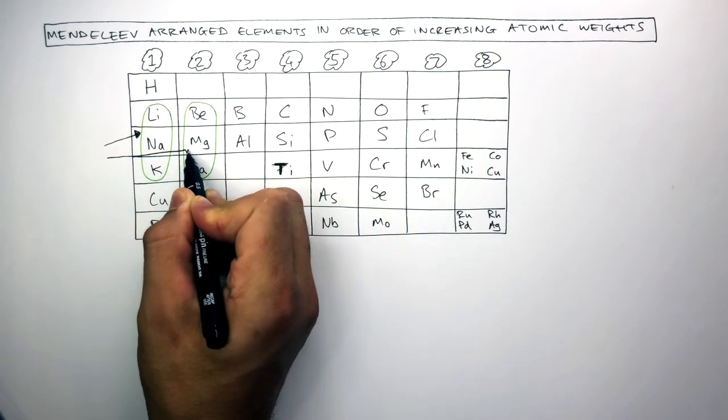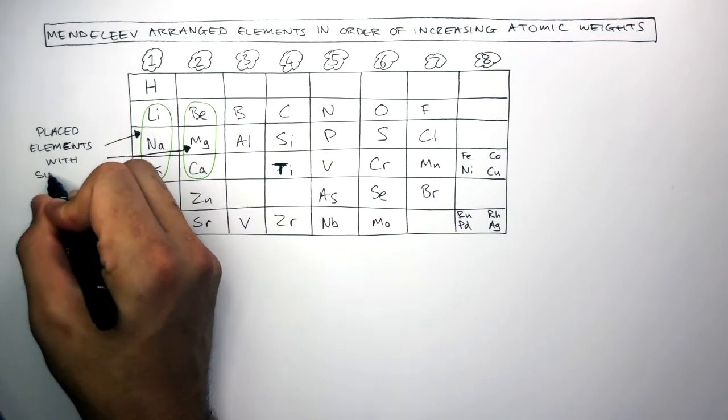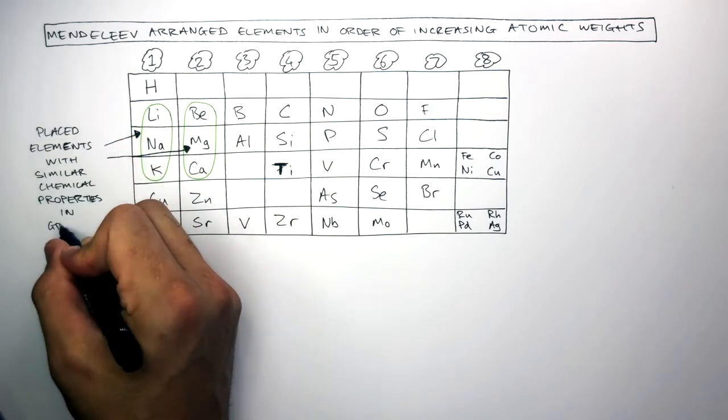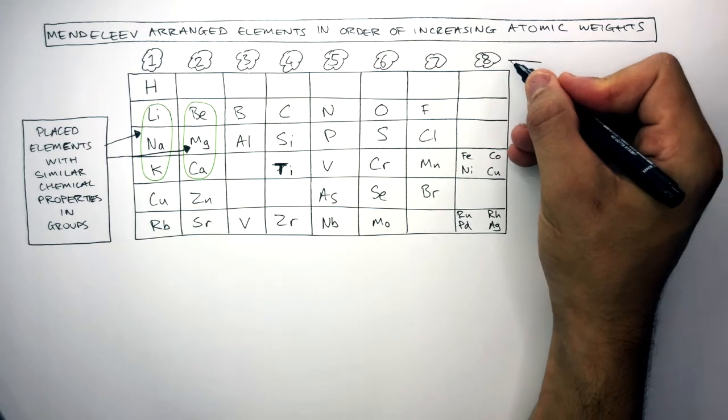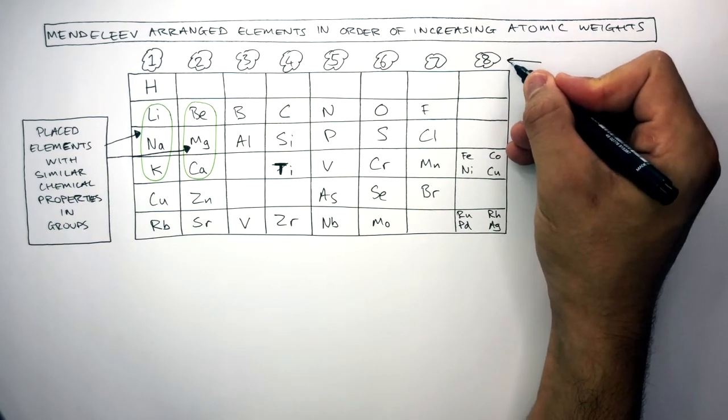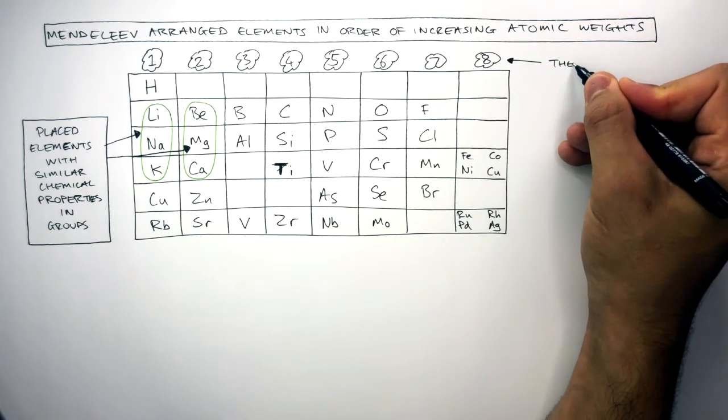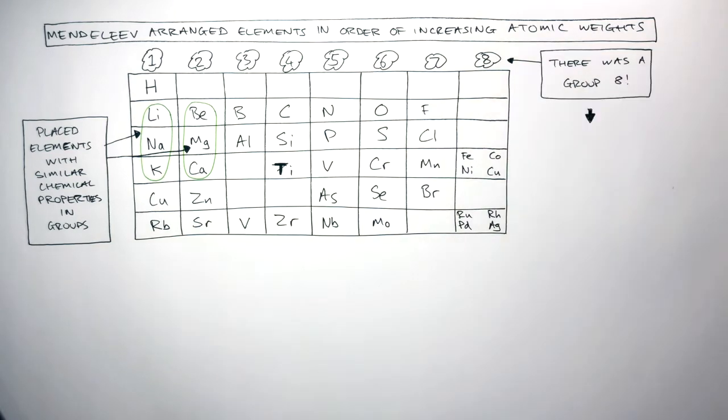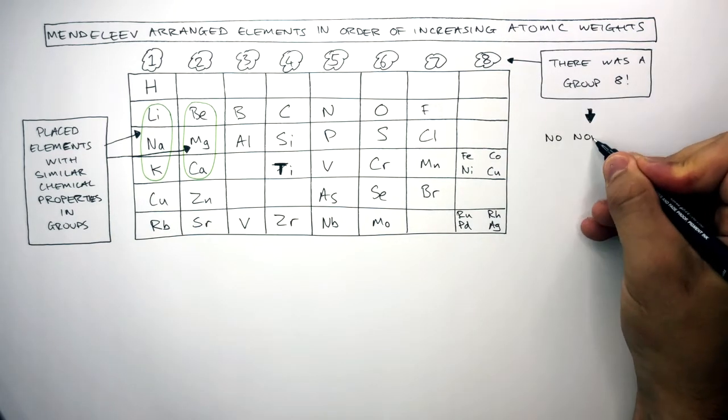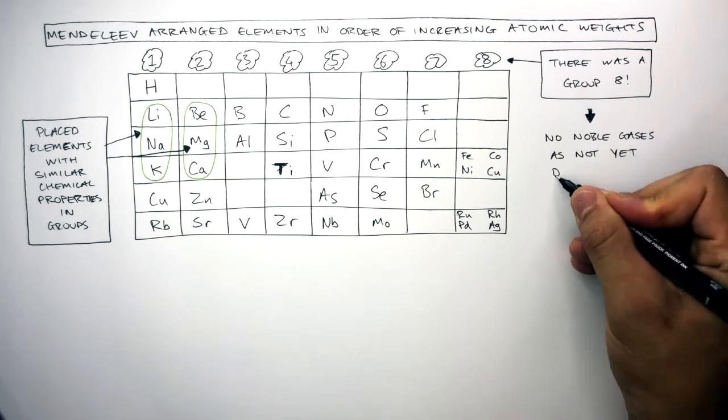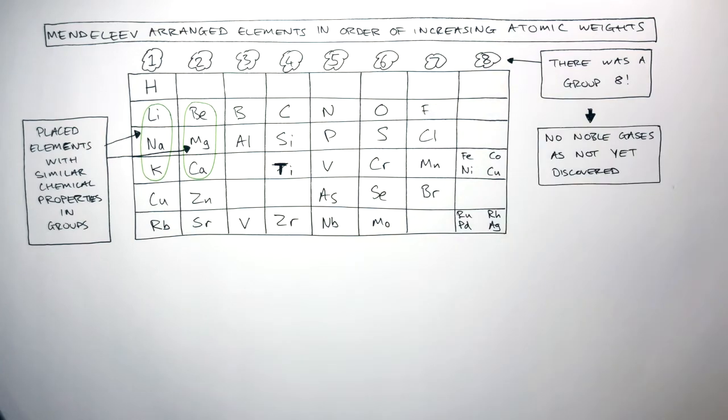Mendeleev correctly placed elements with similar chemical properties in the same group. And we can see here Mendeleev made a very important addition to the periodic table. There was a group 8. However we can see there are no noble gases as they were not yet discovered back in 1869.